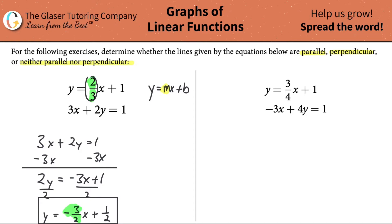So positive 2 over 3, negative 3 over 2. Those are indeed negative reciprocals. And therefore, if they're negative reciprocals, the lines are perpendicular.